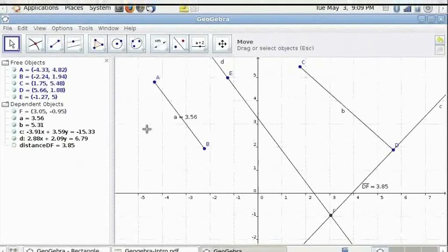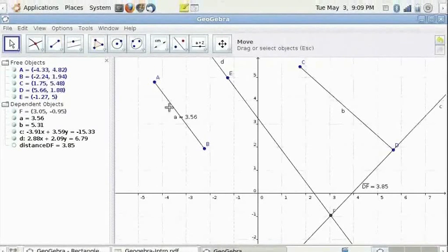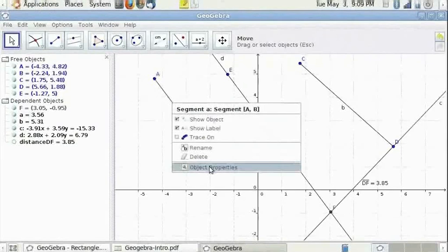Now to change the object properties, move your mouse over the object. When it gets highlighted, right click and click on object properties.